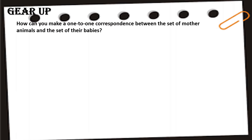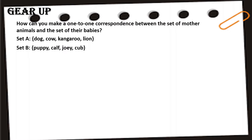Let's gear up with what correspondence is all about. Let's take this example: how can you make a one-to-one correspondence between the set of mother animals and the set of their babies? For Set A, we have dog, cow, kangaroo, and lion. For Set B, we have puppy, calf, joey, and cub.